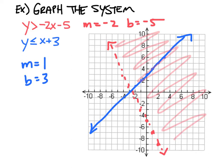Now, the second equation says y is less than or equal to x plus 3. So all of the y's that are less than this line will be solutions. So I'm going to shade below.